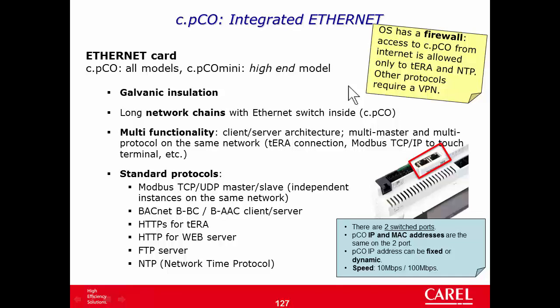The only way to pass through the firewall is to implement a VPN, because with a VPN the CPico and the other device — PC or another controller — will belong to the same network. Only Tera protocol (HTTP for Tera) and NTP are not behind the firewall, so you can connect CPico to the Tera service without configuring any VPN.